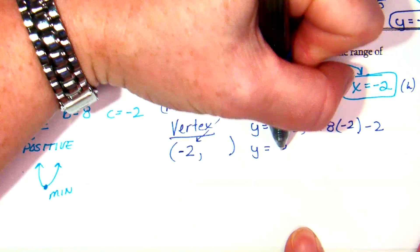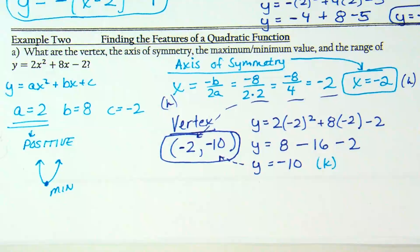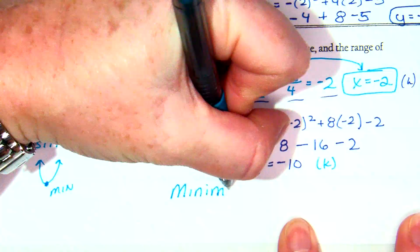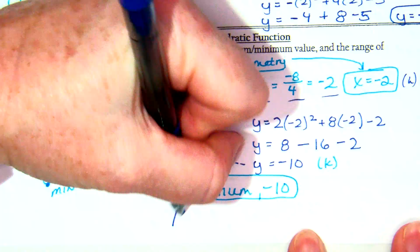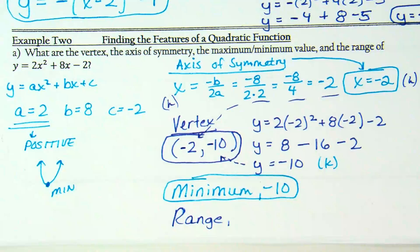Y equals 2 times negative 2 squared plus 8 times negative 2 minus 2. Negative 2 squared is 4, 4 times 2 is 8, 8 times negative 2 is minus 16 minus 2. 8 minus 16 is negative 8, negative 8 minus 2 is negative 10. This negative 10 is the K value and the second piece of my vertex. My vertex is at the bottom of the parabola, so that makes it a minimum. What is the minimum value? The Y value, how low does my parabola go. It's a minimum of negative 10. Range: if it's a minimum, the rest of my parabola is up, so Y greater than or equal to negative 10. We will continue notes tomorrow.